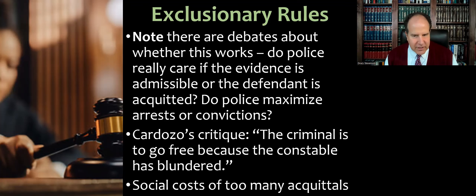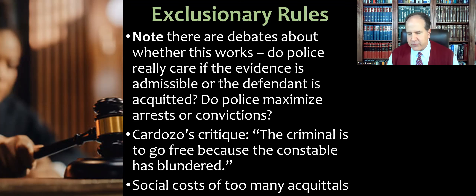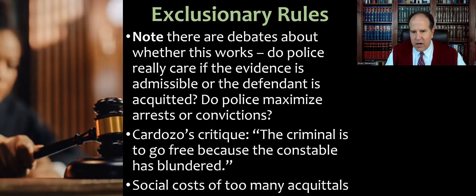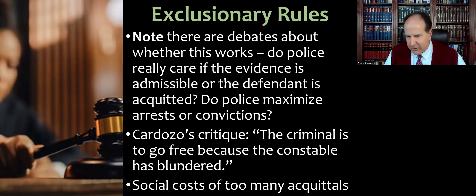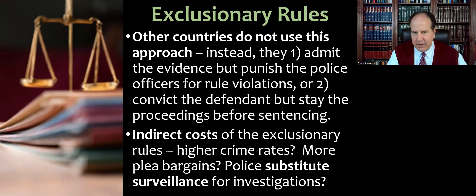Justice Cardozo critiqued the exclusionary rule with one of his witty aphorisms: 'The criminal is to go free because the constable has blundered.' That nicely captures a lot of the criticism. Sometimes we all know the person is guilty — they've already confessed — and now we can't convict them because the police made a mistake and didn't get a warrant first or didn't read them their Miranda rights before they confessed.